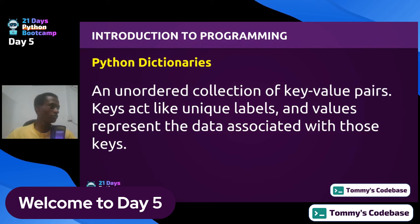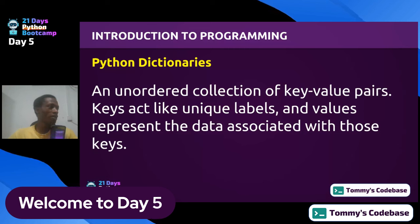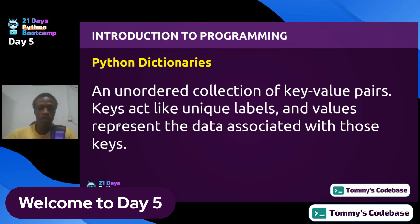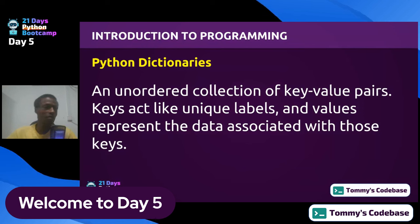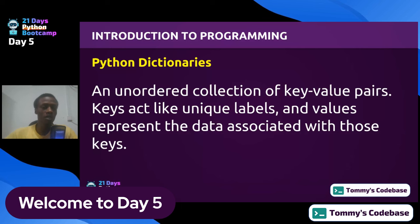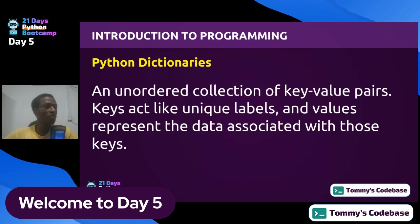A Python dictionary, unlike a list or a tuple, is an unordered collection of key-value pairs. The keys act as unique labels, and the values represent the data associated with those keys. Just like a regular dictionary, you can use words as the keys and the definitions of those words as the values. Unlike lists, you access elements in dictionaries by their keys, not their positions, making them more flexible for storing and retrieving data based on meaningful identifiers.